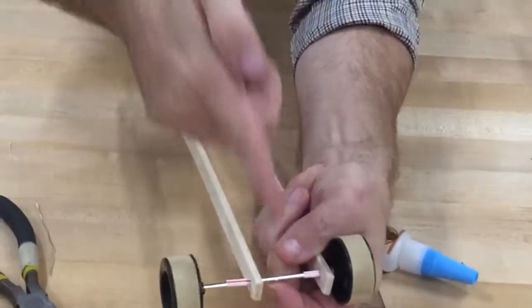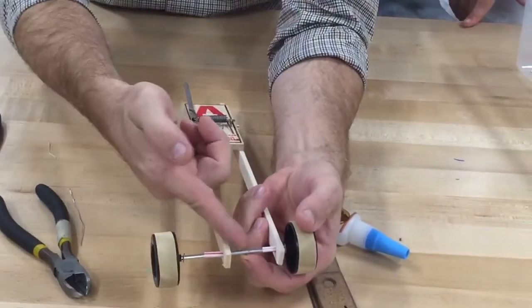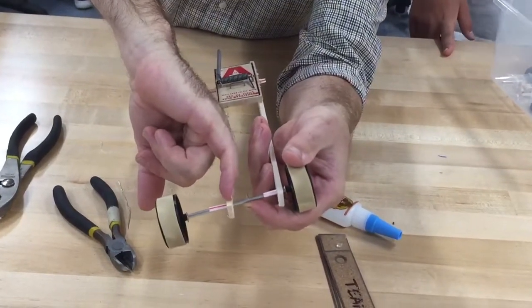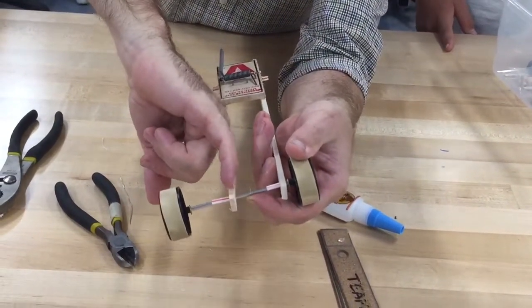Once again on the straw, the straw doesn't come past the chassis rail here because you don't want it to interfere with the string.